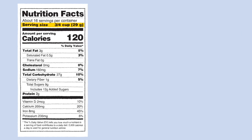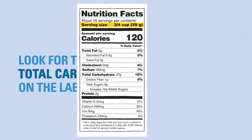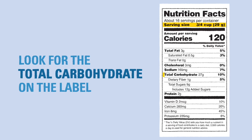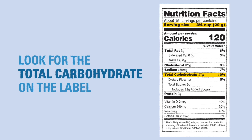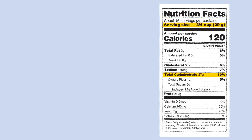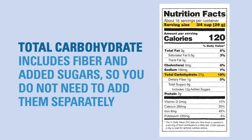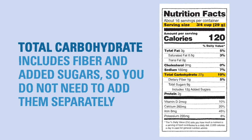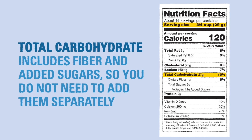Once you have located the serving size, you should look at the total carbohydrate, which is always in bold print on the food label. Total carbohydrates already includes the grams of fiber and added sugar and do not need to be added separately.